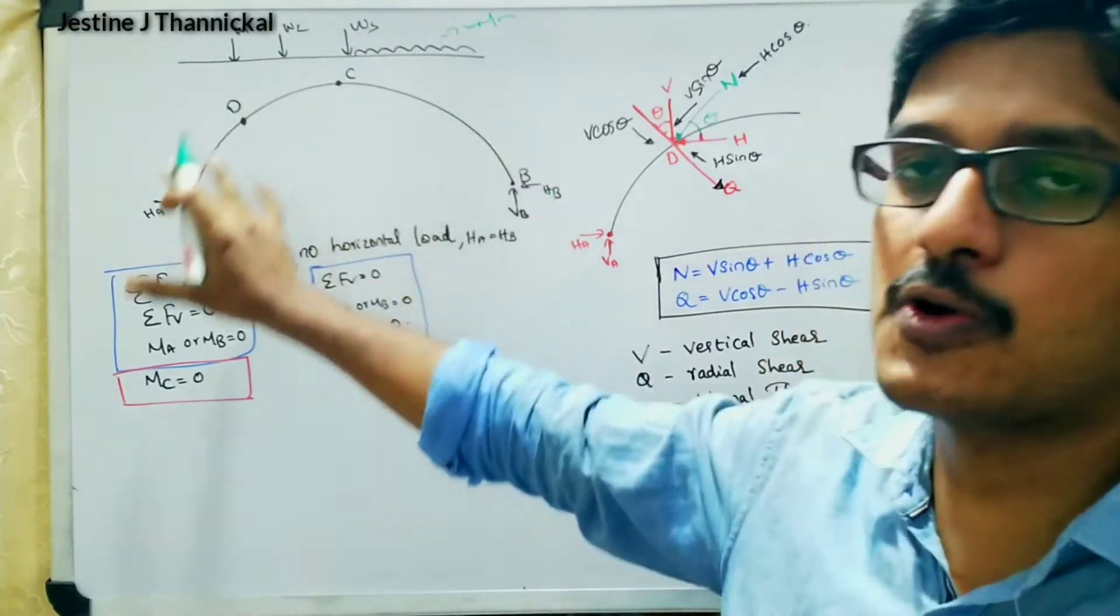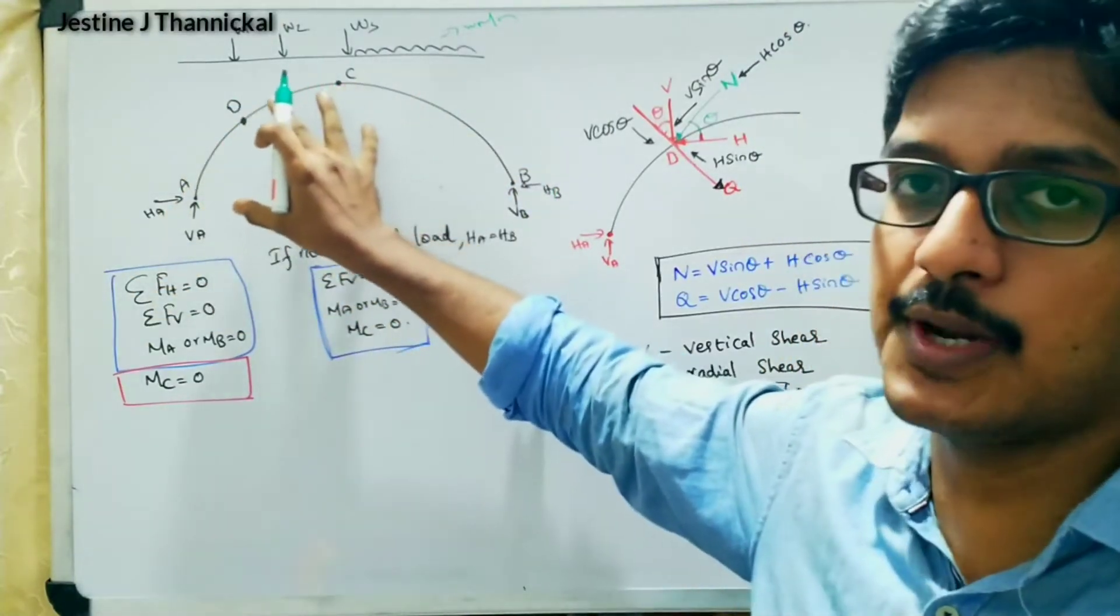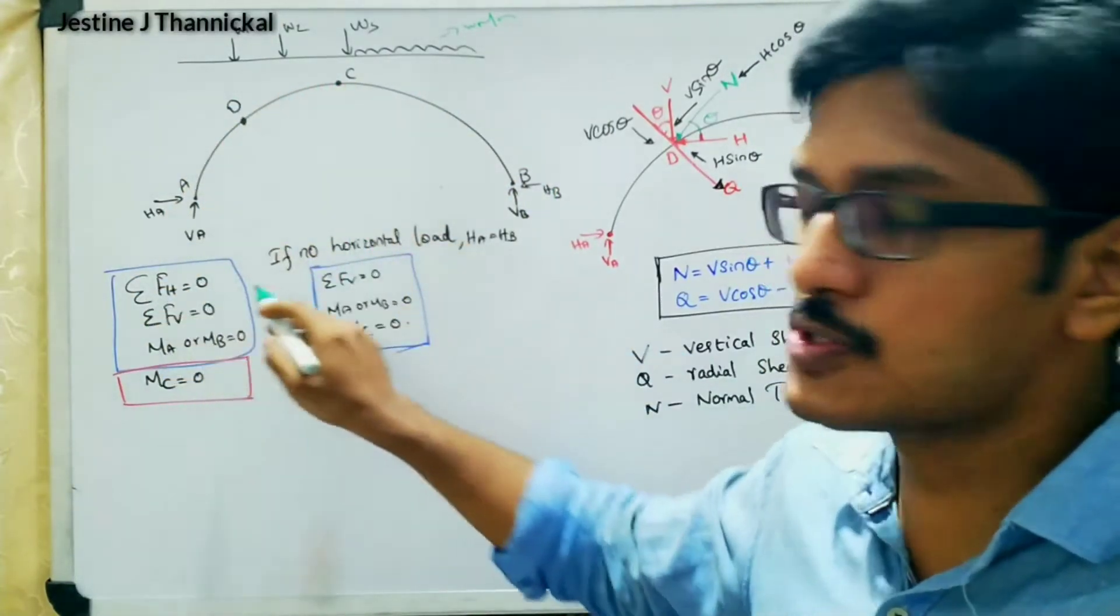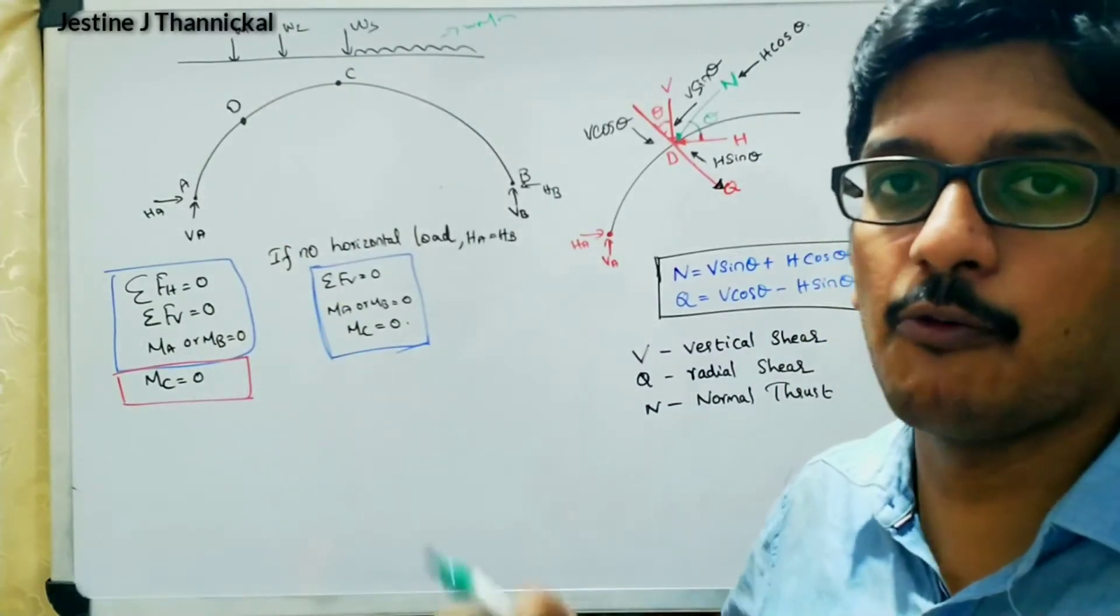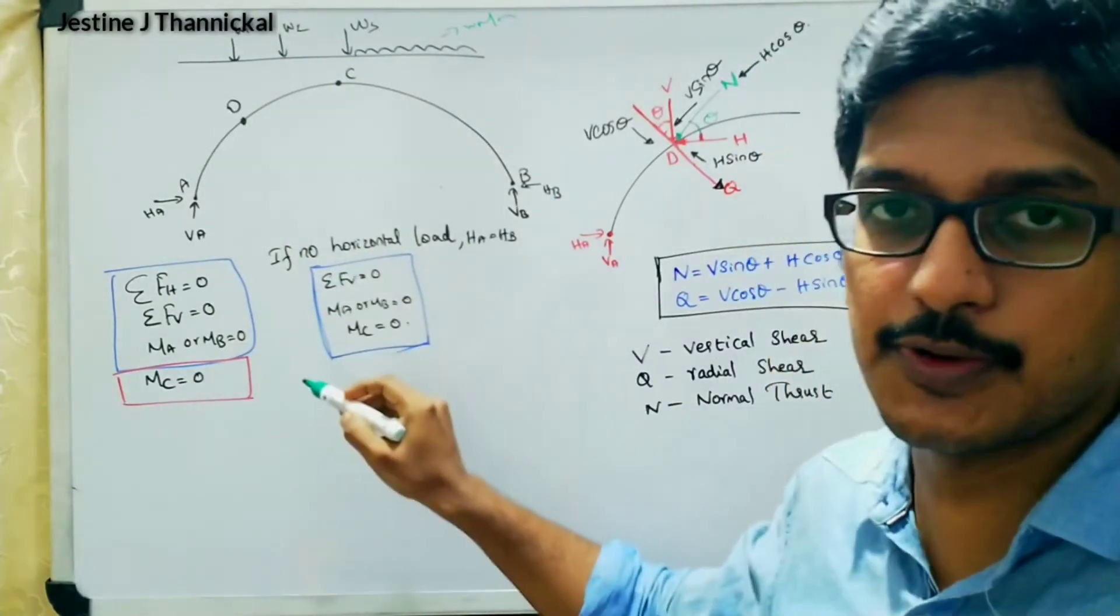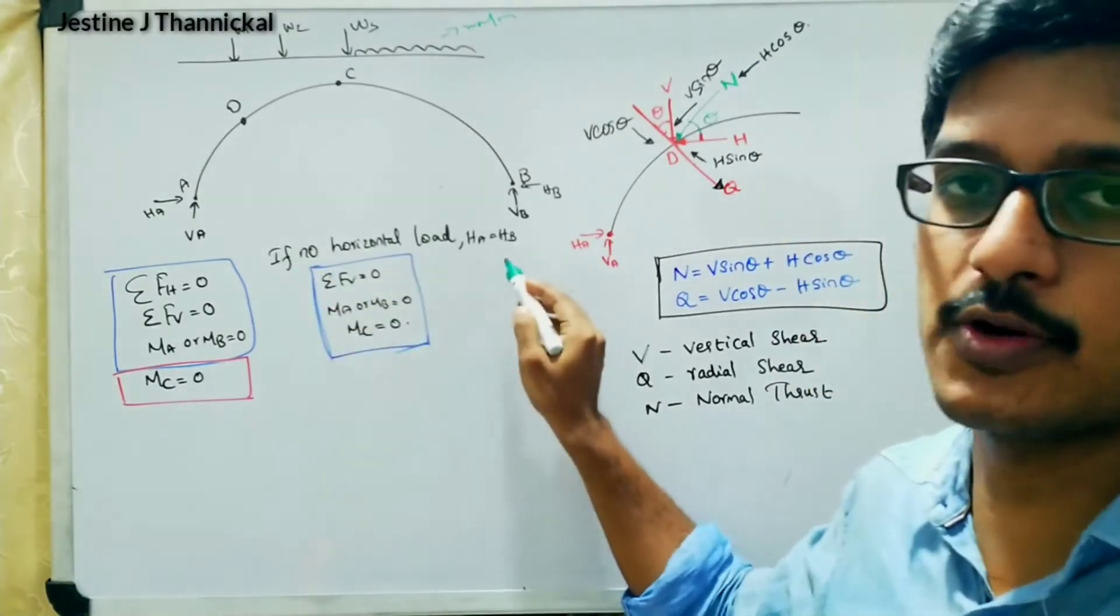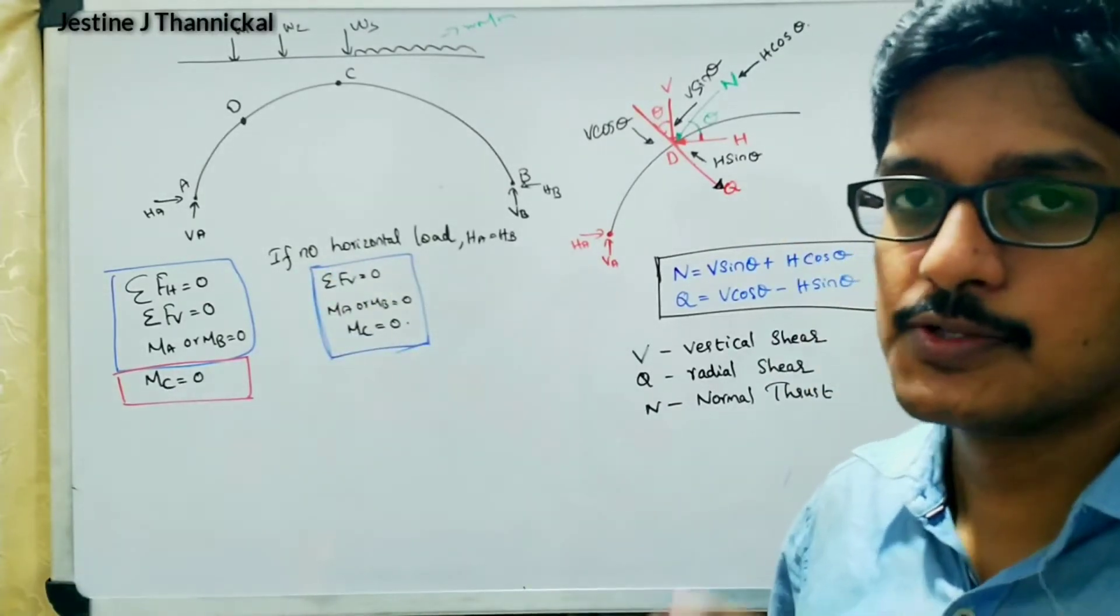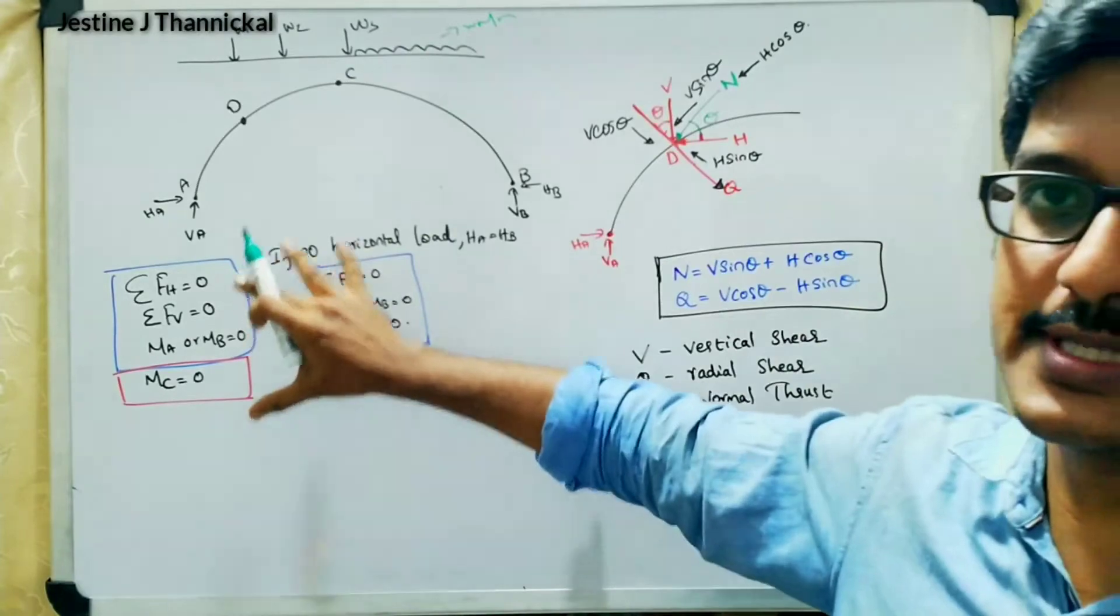Then in the case if no horizontal loads are acting over the parabolic arches, this horizontal equilibrium equation can be avoided. So these are the three equilibrium equations only if no horizontal load will be acting. These are some of the equilibrium equation relationships.